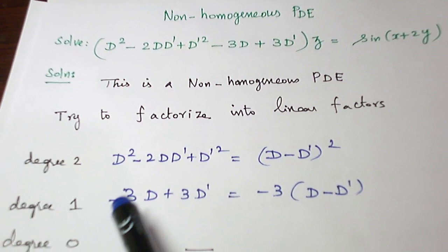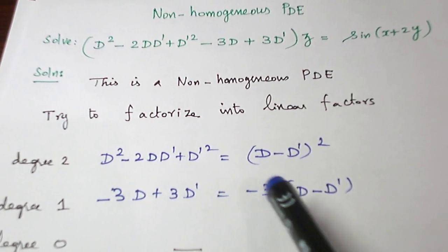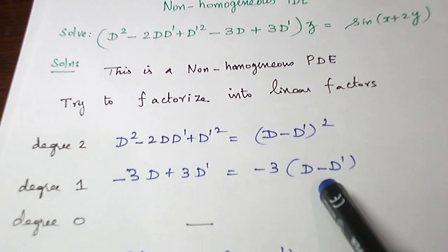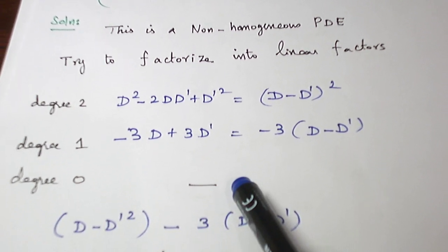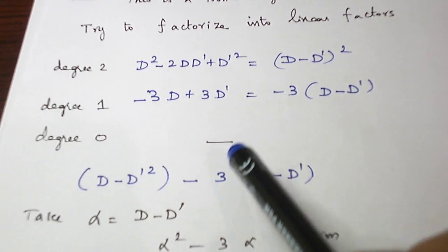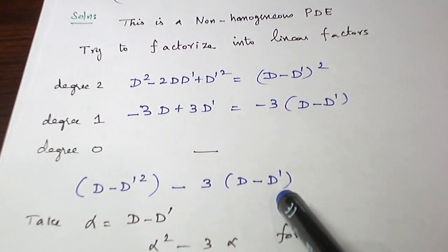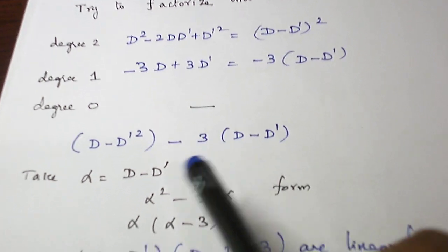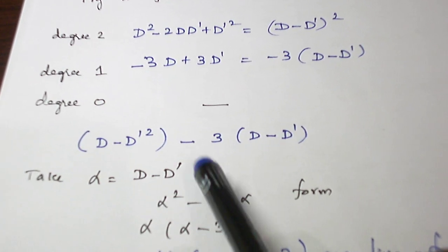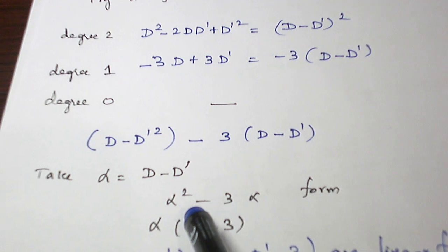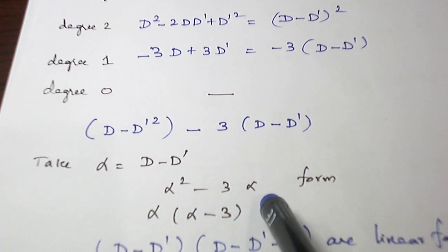And let us take degree 1 term minus 3d plus 3d dash. Minus 3 is taken in common, d minus d dash. There is no degree 0 term. So let us write it as d minus d dash whole square minus 3 into d minus d dash. And let us take alpha is equal to d minus d dash. So it is in the form of alpha square minus 3 alpha.